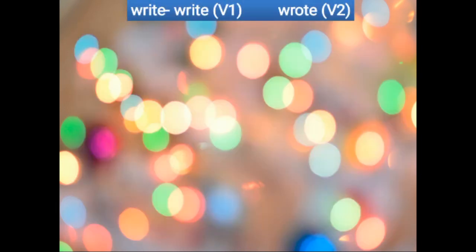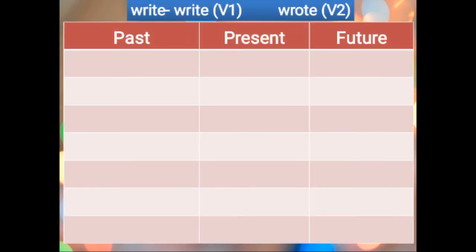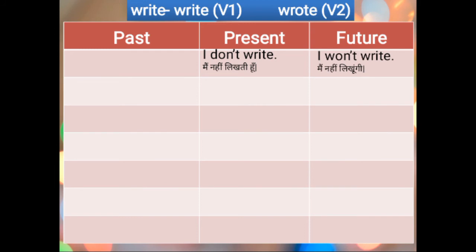Now let's try the negative sentences. I DON'T WRITE — to make negative sentences in the simple present tense, we use DON'T or DOESN'T. Because it is I, we use DON'T. I DON'T WRITE — MAIN NAHI LIKHTI HUN. I WON'T WRITE — MAIN NAHI LIKHUNGI. I DIDN'T WRITE — in place of DON'T we use DIDN'T. MAIN NAHI LIKHTI THI, ya MAINE NAHI LIKHA THA.